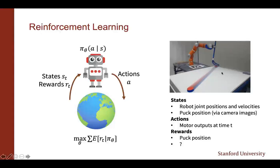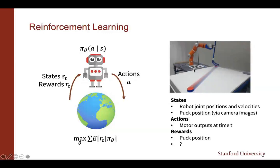Here's a robotic example of this setting. The state of the system includes robot joint positions and velocities measured from the robot hardware. In this particular example, we're interested in shooting a hockey puck into different goal positions. So the initial puck position can also be given as a state to the agent, provided by camera images. The actions are motor outputs for this robotic manipulator — there are seven joints, so we work with continuous seven-dimensional action spaces. The reward can be constructed based on the final puck position, whether it lands on the target or not.